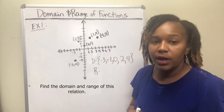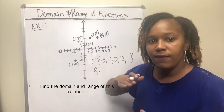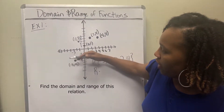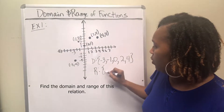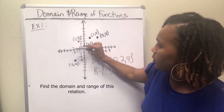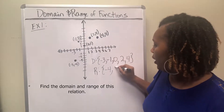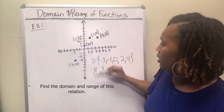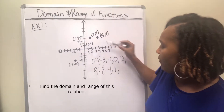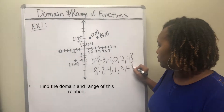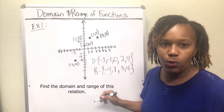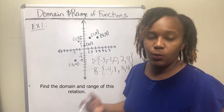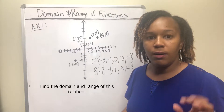You want to do the same thing with the range, except now you want to read the graph from bottom to top — that's from smallest to biggest. What is the smallest y on this graph? The smallest y value is negative four. Then the next y value is one, then three, and then the last one at four — where you have two y values of four. So your range will look like this, which consists of the points negative four, one, three, and four. That's how you write your domain and range whenever you have just ordered pairs.